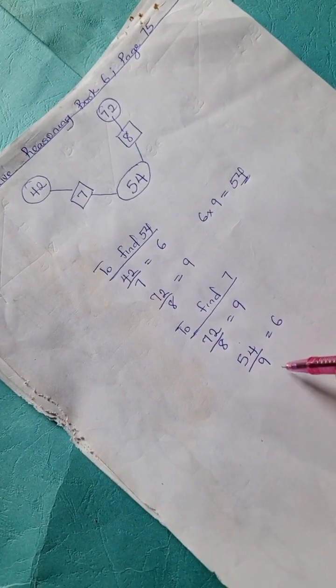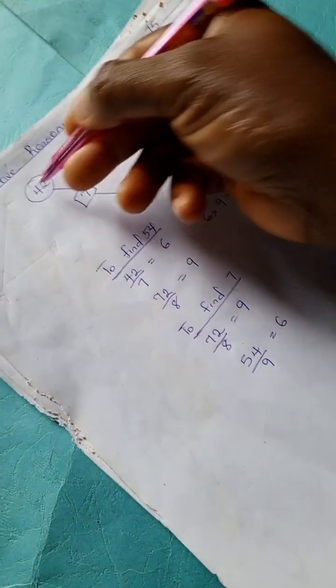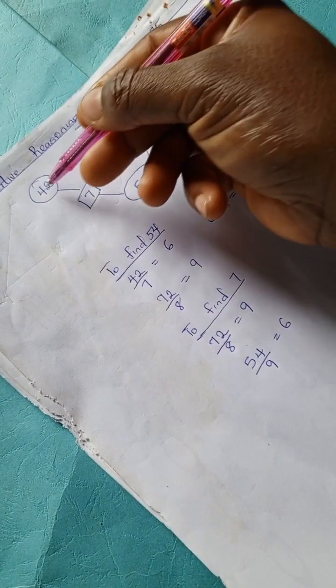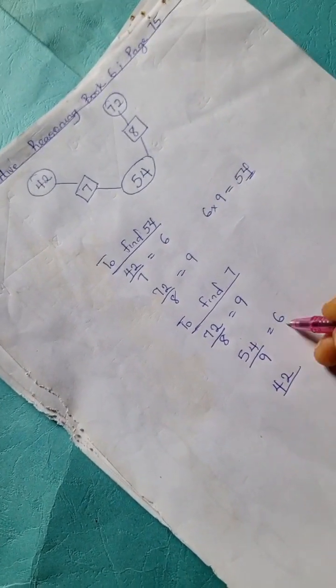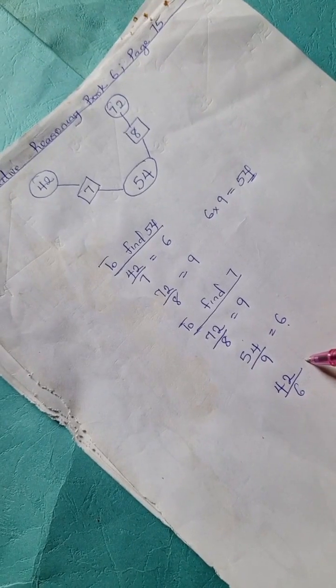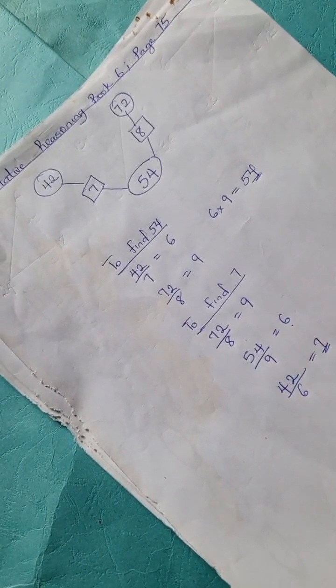So here we have the connection between these two numbers. We have 42 divided by 6, which is 7.